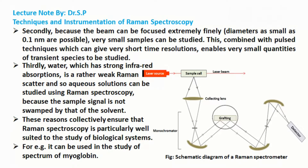Secondly, because the beam can be focused extremely finely, very small samples can be studied. For example, samples with diameters as small as 0.1 nanometers are possible to study in Raman spectroscopy. Combined with pulse techniques which can give very short time resolutions, this enables very small quantities of transient species to be studied.